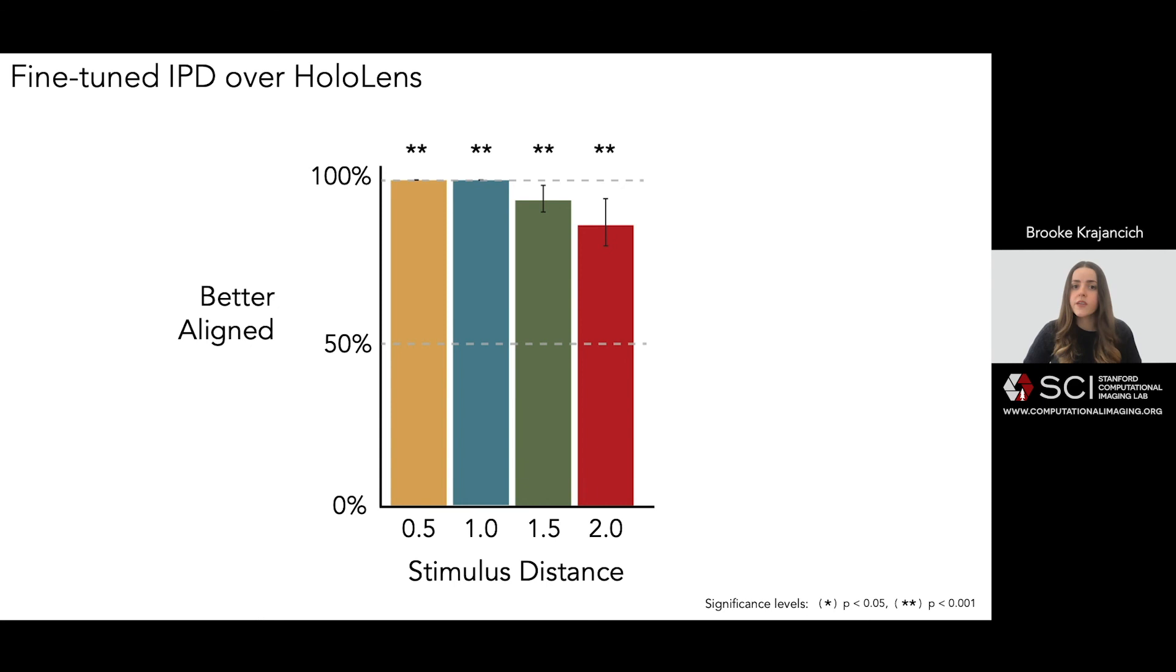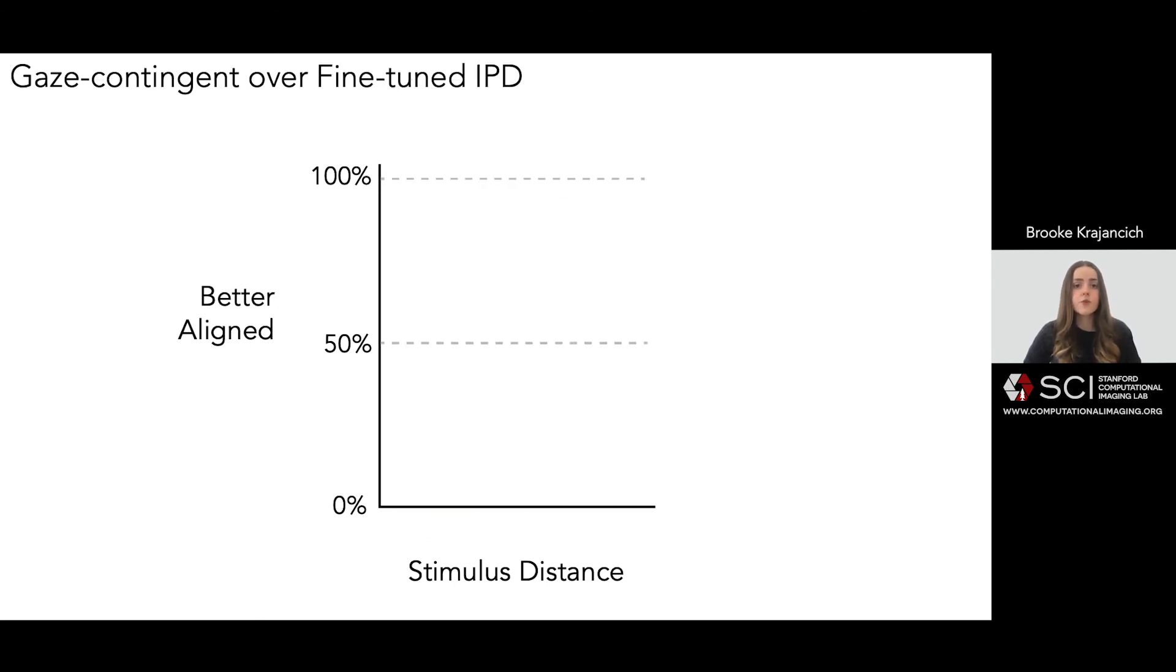So as such, we compared this mode to our gaze contingent rendering in a subsequent block of trials. At a target distance of two meters, the rendering modes were indistinguishable. Now this is reassuring, since again,